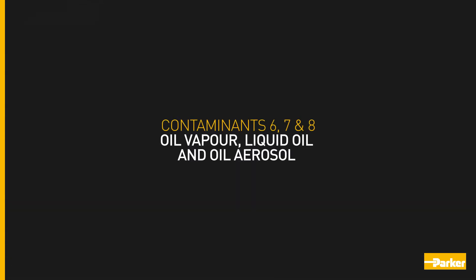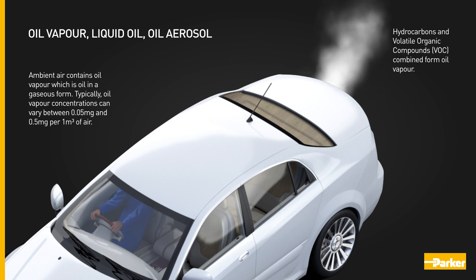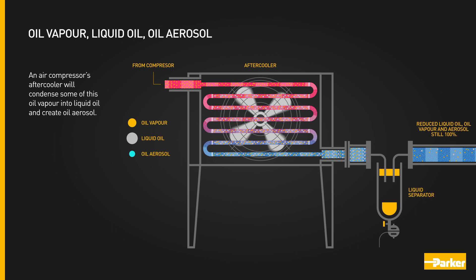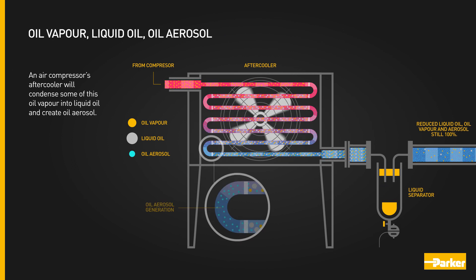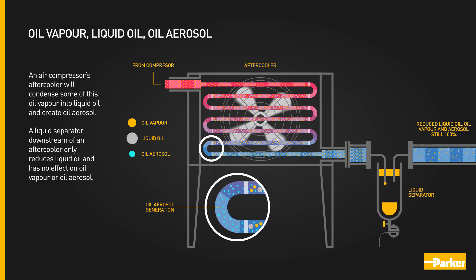Contaminants six, seven and eight: oil vapour, liquid oil and oil aerosol. Ambient air contains oil vapour, which is oil in a gaseous form. Typically, oil vapour concentrations can vary between 0.05 milligrams and 0.5 milligrams per cubic metre of air. An air compressor's aftercooler will condense some of this oil vapour into liquid oil and create oil aerosol. A liquid separator downstream of an aftercooler only reduces liquid oil and has no effect on oil vapour or oil aerosol.